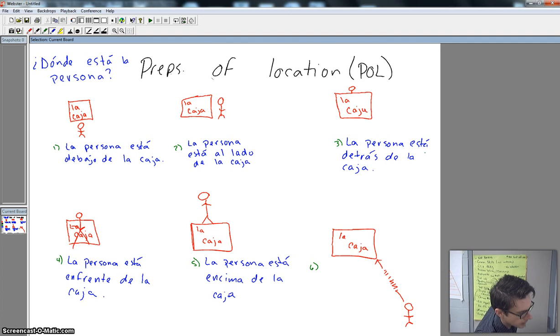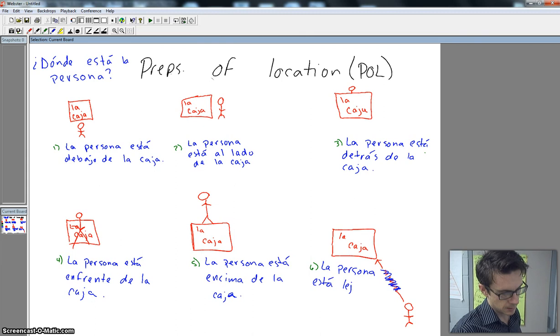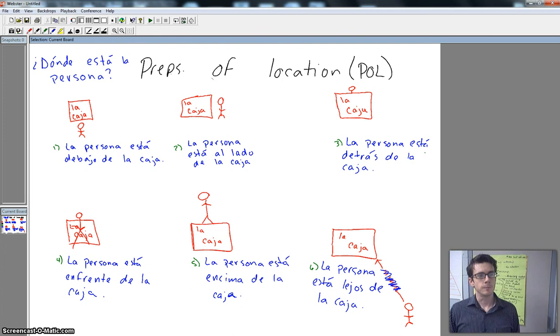Alright, now this last one you've got to use your imagination. I've got this person here. And I've tried to show that there is a lot of distance passing here. That's why that line is broken up. So he's not very close to this at all. So ¿dónde está la persona? He's far away from. So pause it if you're thinking. La persona está lejos de la caja. Alright.